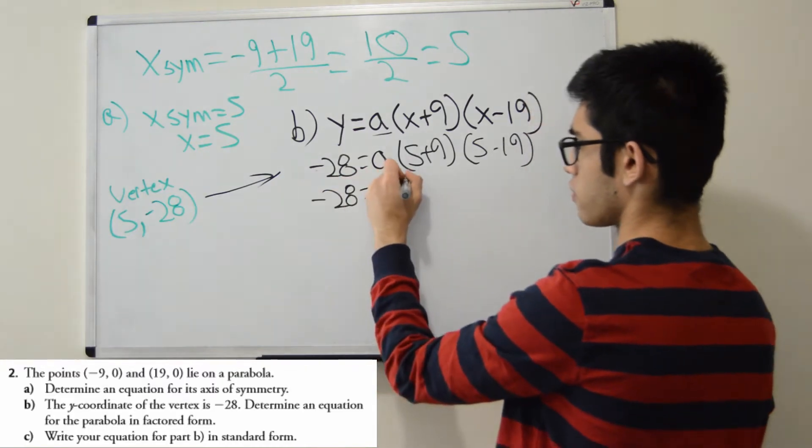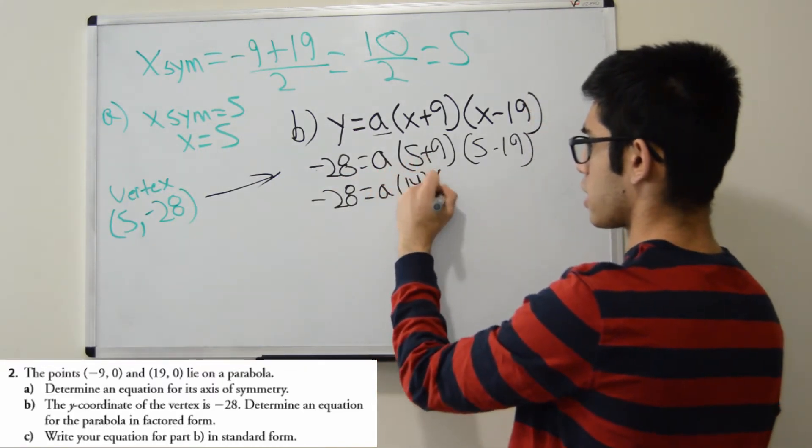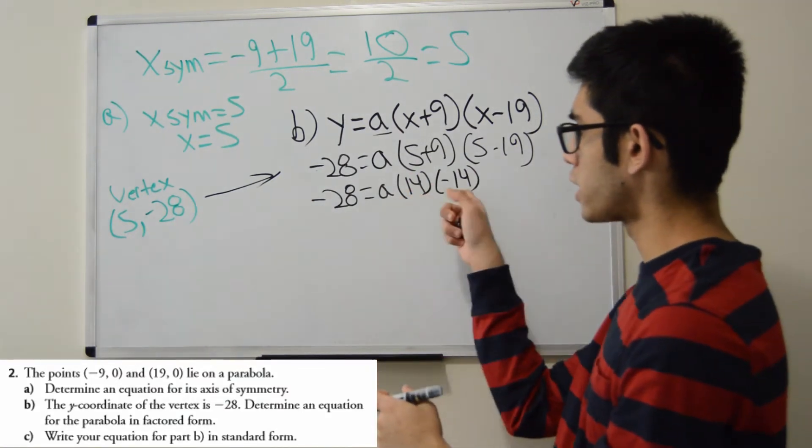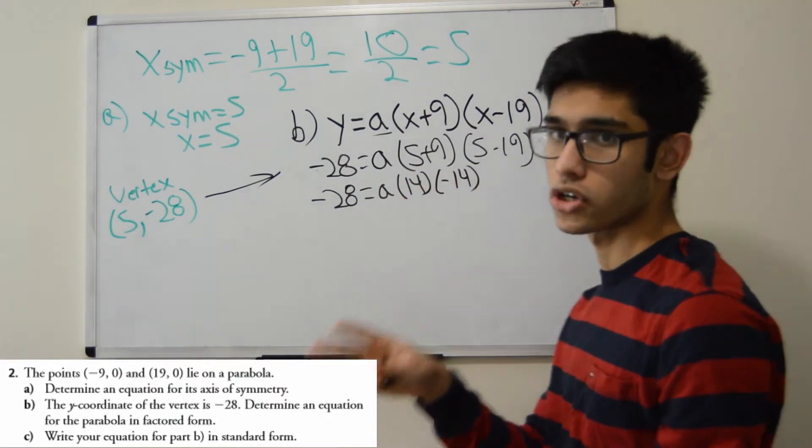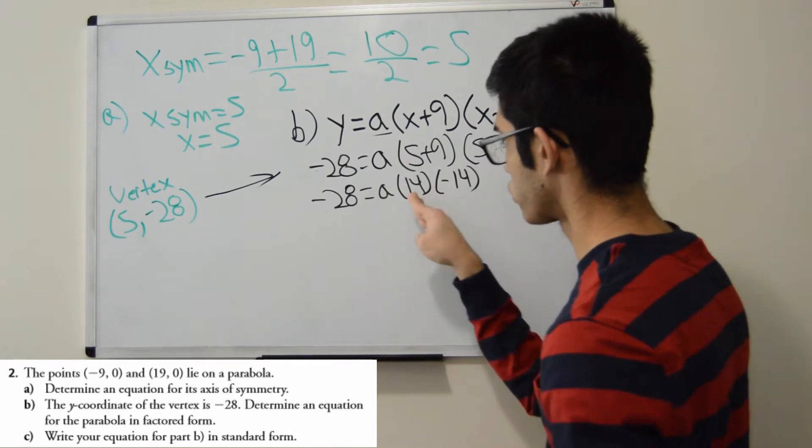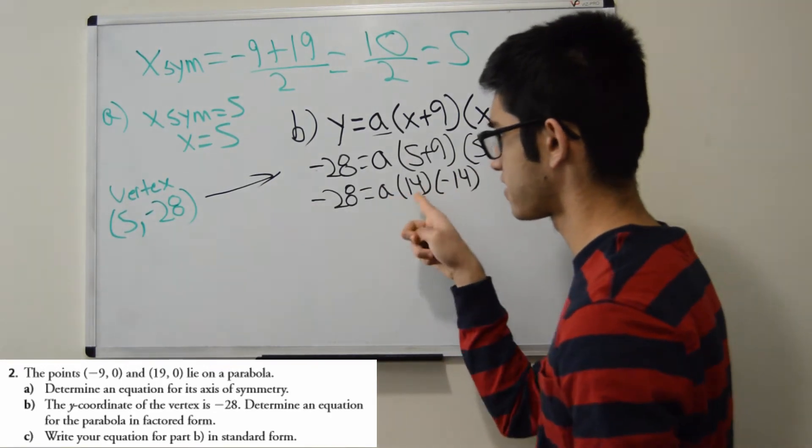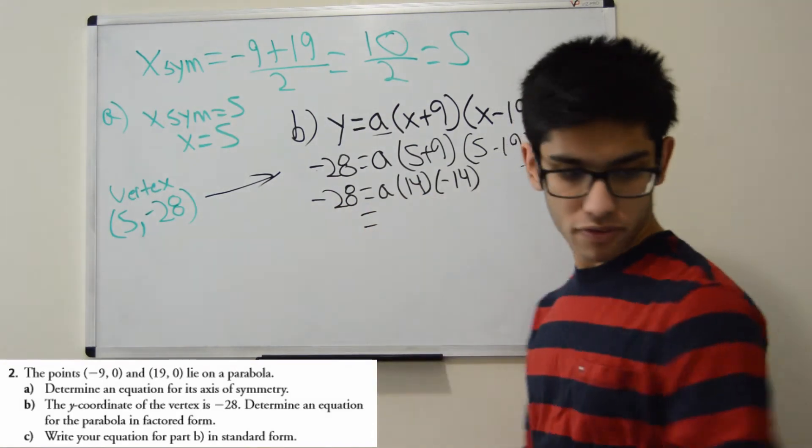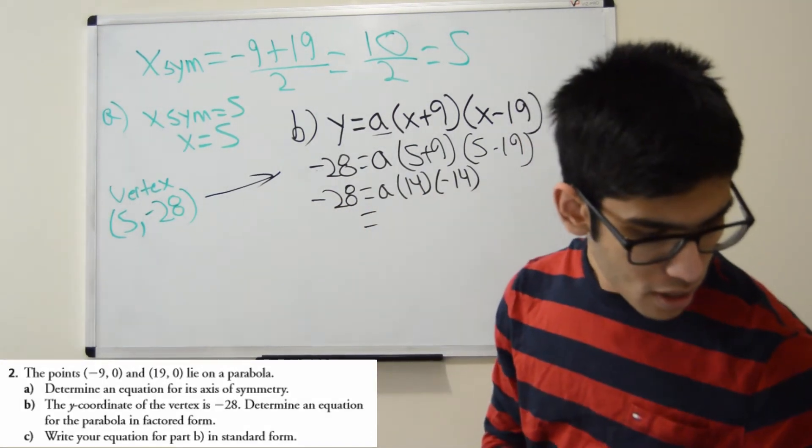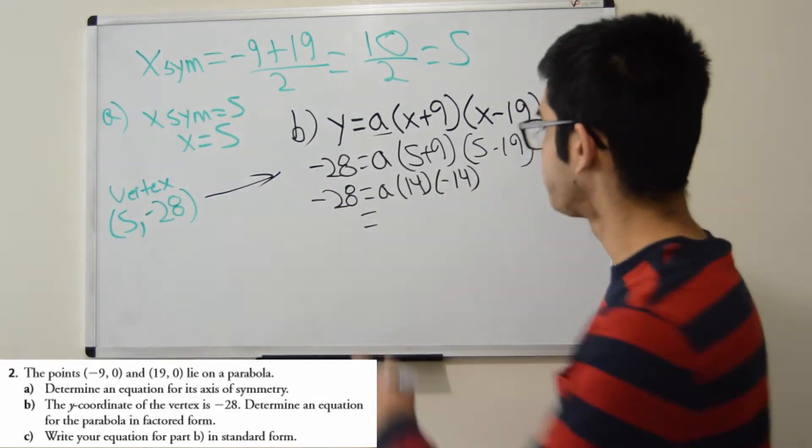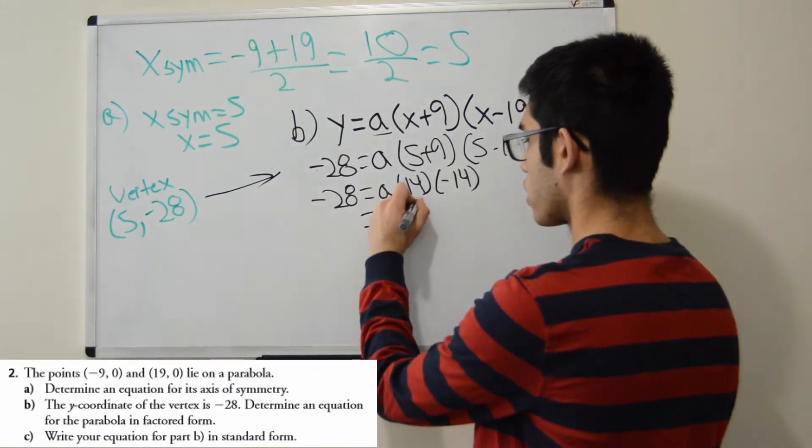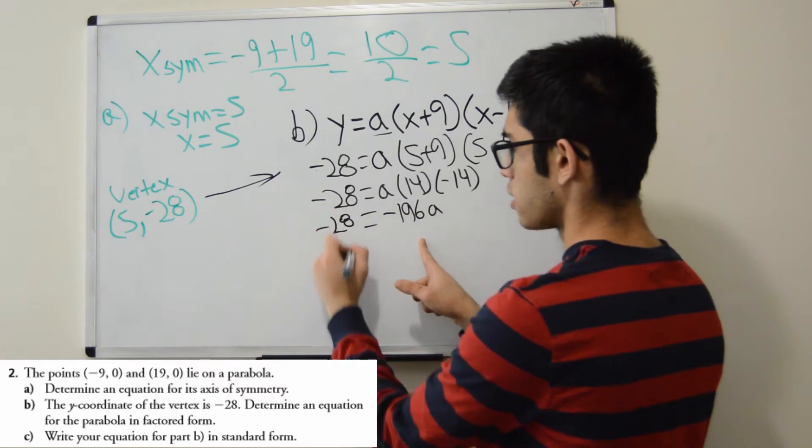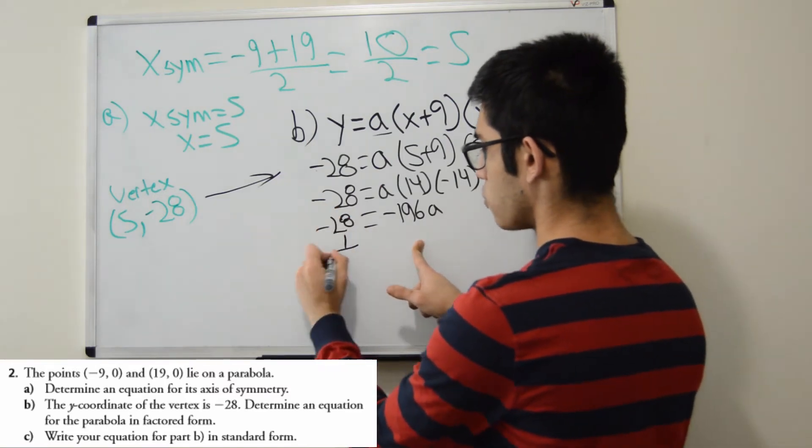So 5 + 9 is 14. And 5 - 19 is -14. Great. If you see something like this, 14, -14, you're doing it correctly. Your two factors or your two brackets here should contain the same number but different signs. So 14 times -14, that is -196. So -196a is left on this side. And I have -28 on this side.